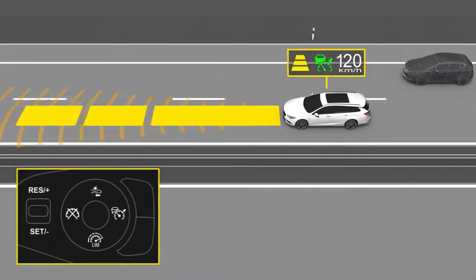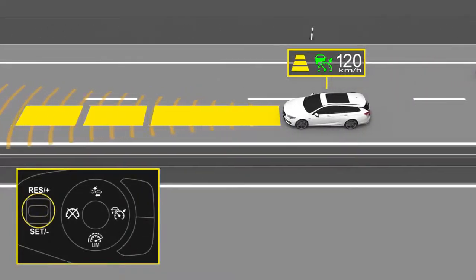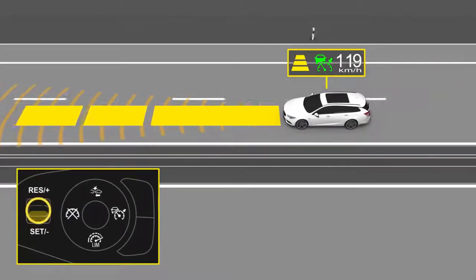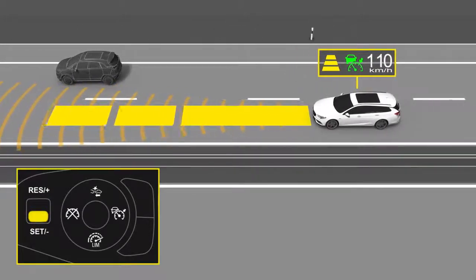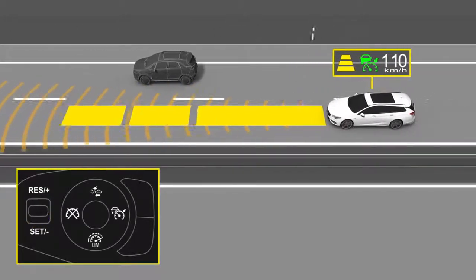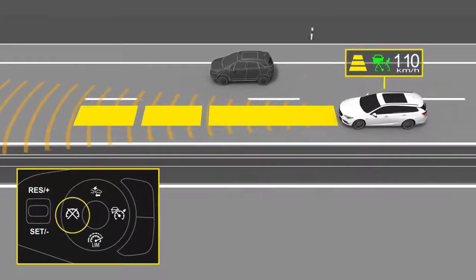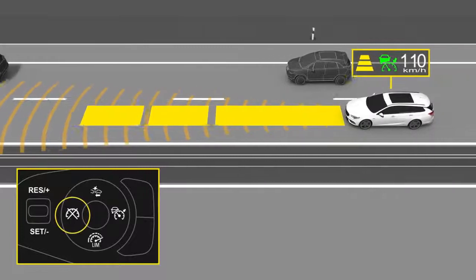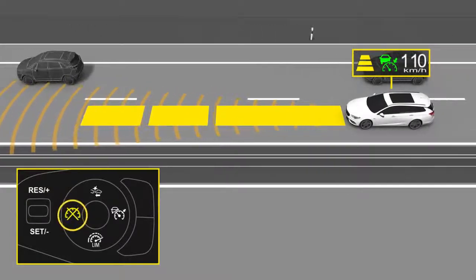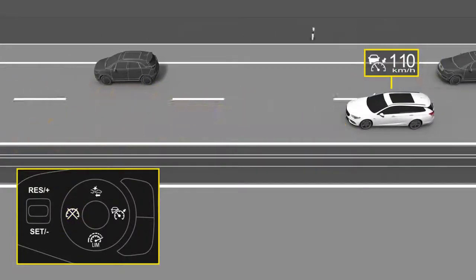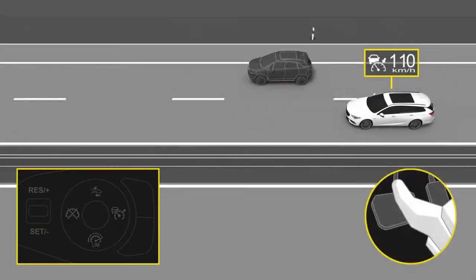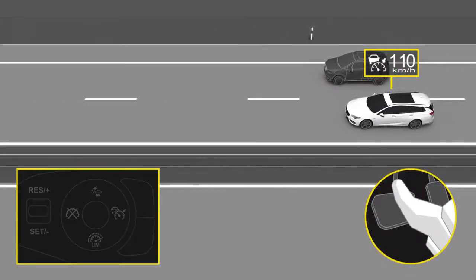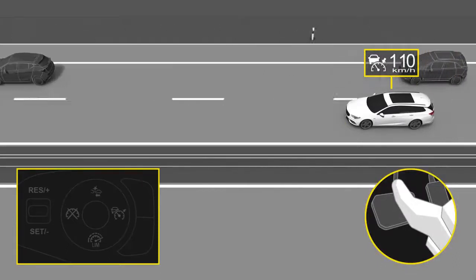Decrease the set cruising speed by moving the thumb wheel down. To deactivate ACC, press the cancel button on the steering wheel. Pressing the brake pedal also deactivates the system.